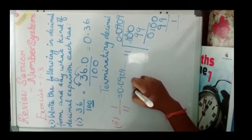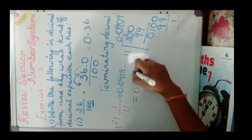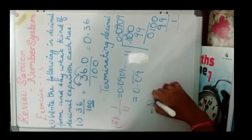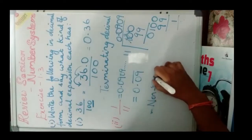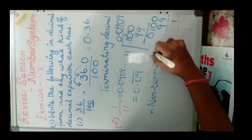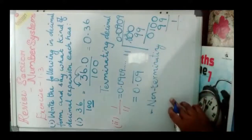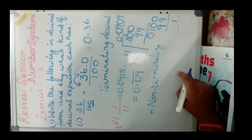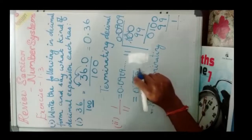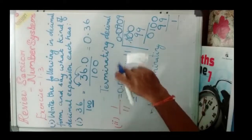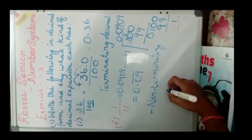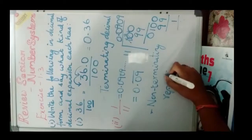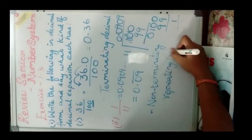This can also be written as 0.09 bar. If this bar comes, then definitely it is a non-terminating decimal. After identifying non-terminating, I need to write whether it is recurring (repeating) or non-recurring (non-repeating). Since 0.09 is repeated in sequence, therefore you have to say it is a repeating decimal — a non-terminating recurring decimal.